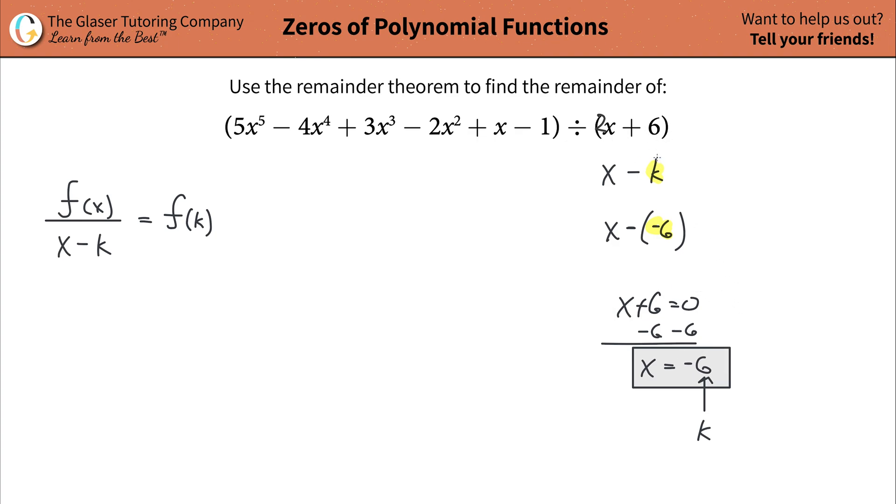So if this were 2x plus 6, it doesn't fit this nicely. But you can do 2x plus 6 here, and then your k value would have been negative 3. And you can still use it.